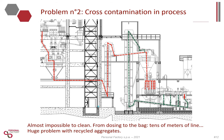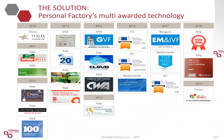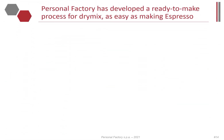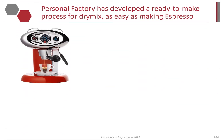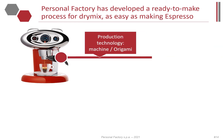The solution is Personal Factory — a multi-awarded technology that has won awards for its cloud technology, process technology, chemicals, and innovative business model. Personal Factory has developed a medium-sized plant with a ready-to-make process specially designed for dry mix production, making production as easy as making an espresso.